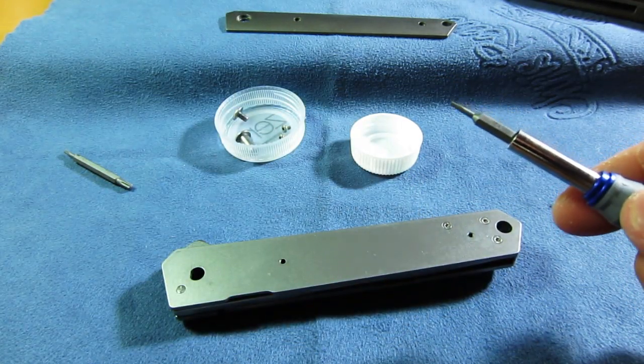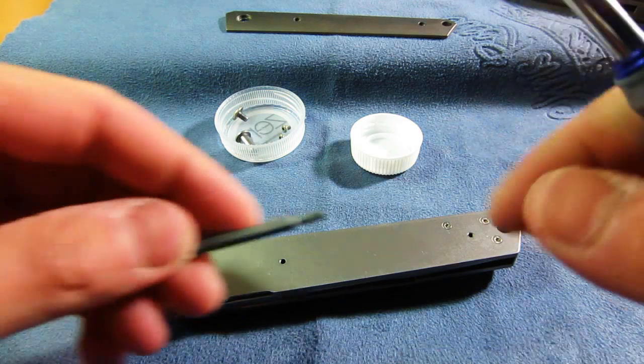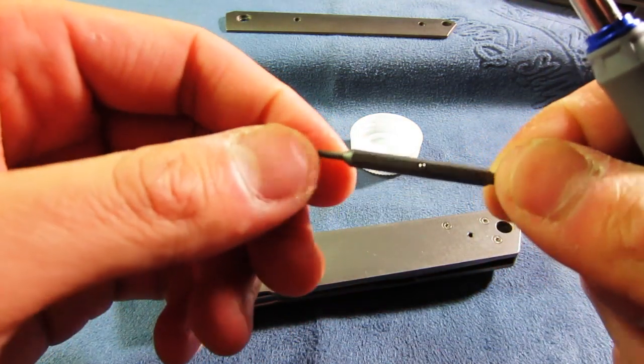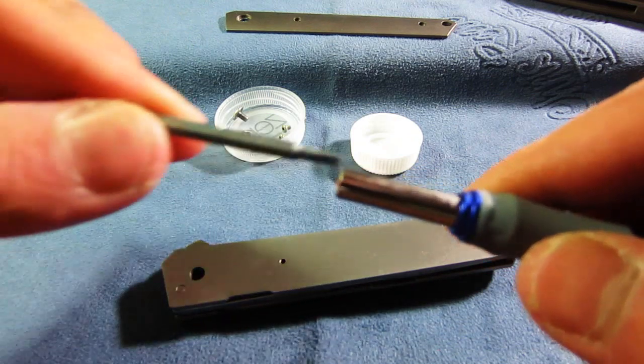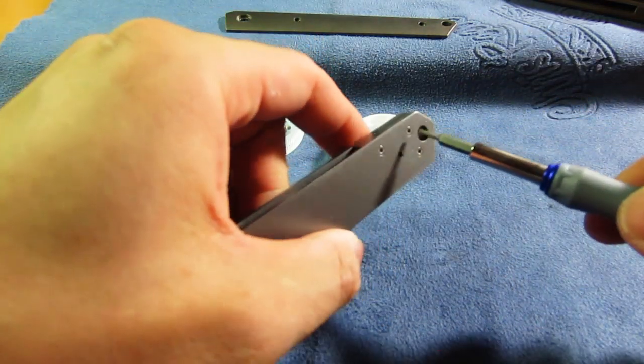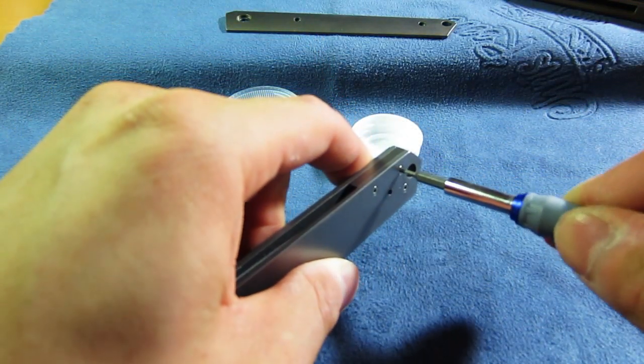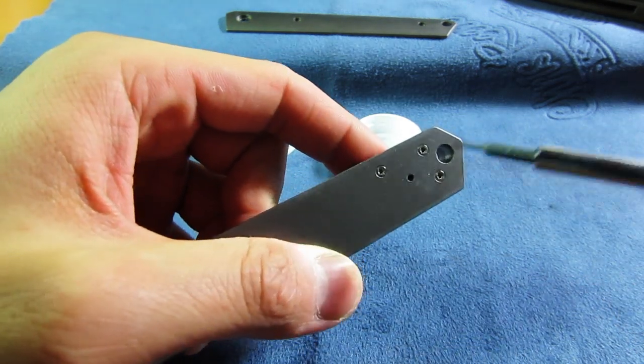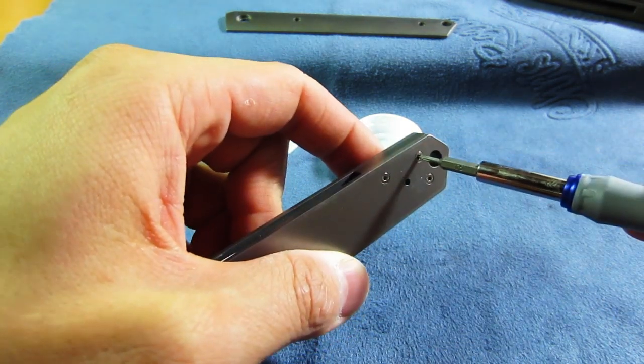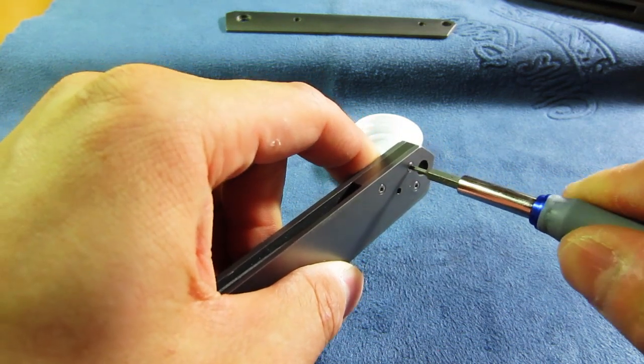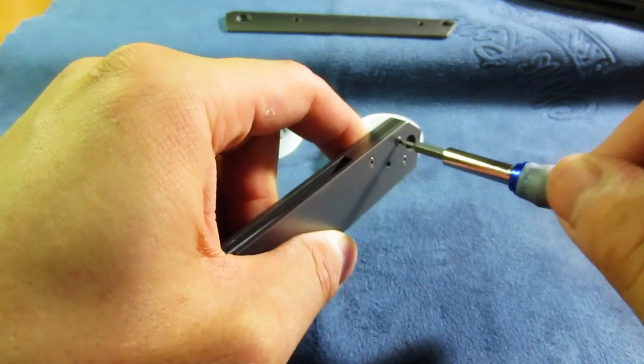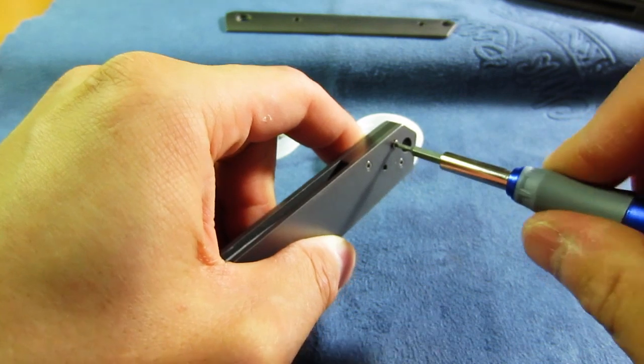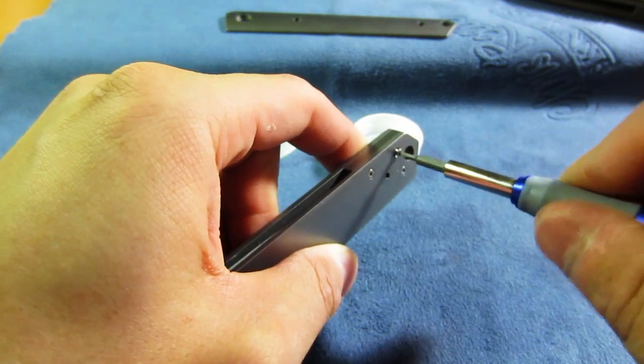I'm being very careful not to strip my screws because that is the last thing you want to do, it will be difficult to put your knife back together. Yep it is a T5, so these three screws here that screw into the tie backspacer, they are a T5 for reference.